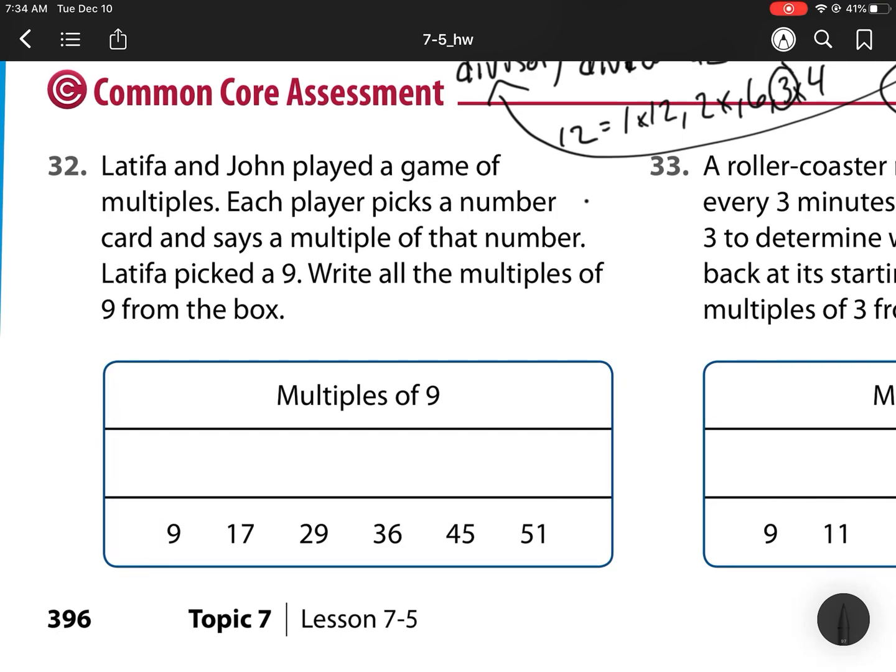Now, 32 and 33. Latifah and John played a game of multiples. Each player picks a number card and says a multiple of that number. Latifah picked a 9. Write all the multiples of 9 from that box. Well, here is a multiple of 9. 17 is not, because it goes 9, 18, 27, 36. There is a multiple of 9. 45, there is a multiple of 9. And then it would be 54. So, I only have those 3 multiples.